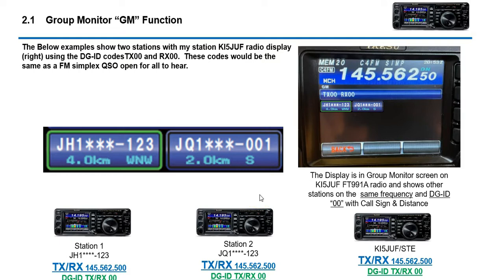This is an example of what the Group Monitor function looks like. It shows my radio and two additional stations, each with their call sign. They're transmitting on the same frequency but also using digital ID code 00, which I'll talk about later. It's essentially like a CTCSS code that allows you to have more private conversations. They have 1 to 99 different codes called DGID codes, and 00 basically means simplex — you're talking to everyone.